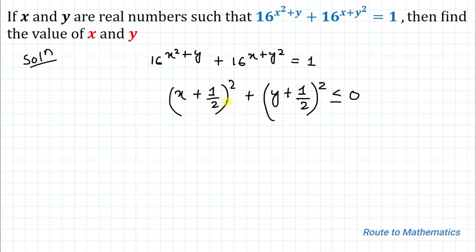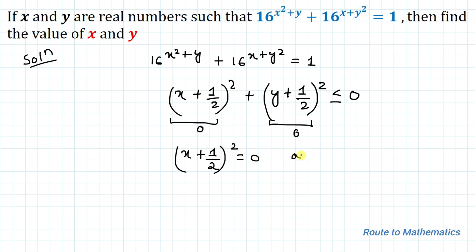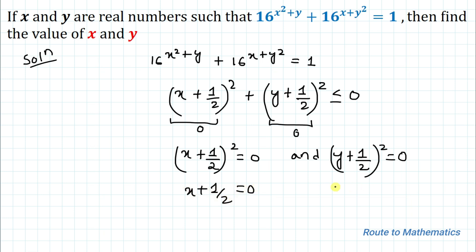So we have (x + 1/2)² + (y + 1/2)² less than or equal to 0. Since x and y are real numbers, this equation holds true only when each term equals 0. So we write (x + 1/2)² = 0 and (y + 1/2)² = 0, which means x + 1/2 = 0 and y + 1/2 = 0.